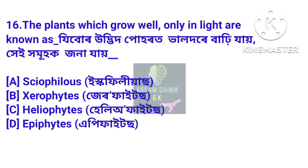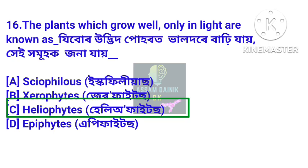Question 3: The plants which grow well only in light are known as — zibur utbidh poohorot bhaldore bahi jai khe. Answer: Heliophytes. Heliophytes na mere zana jai zi khomu utbidh kebor poohorodara bhaldore bahi jai.